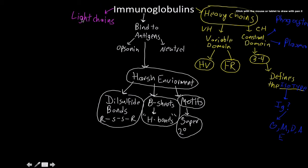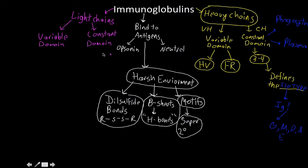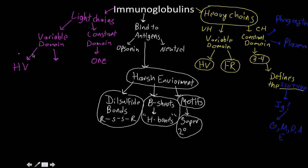For the light chains, they have the exact same thing — a variable domain and a constant domain. But there's not three or four constant domains; there's only one type of constant domain in the antibody. The isotypes of light chains are kappa and lambda. Just like with the heavy chains, the variable domain of light chains has a hypervariable region and a framework region.